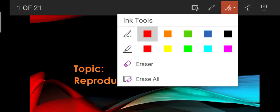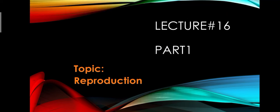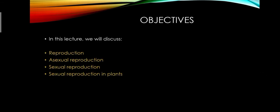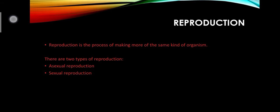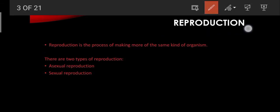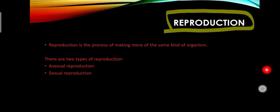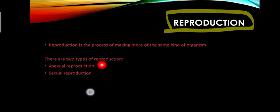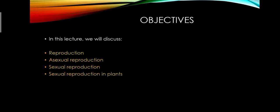Welcome to the sixteenth lecture, part one. The topic of this lecture is reproduction. We will discuss asexual reproduction, sexual reproduction, as well as sexual reproduction in plants. The further topics of the sixteenth lecture will be covered in the next lectures. Reproduction is the process of making more of the same kind of organisms. There are two types: asexual reproduction and sexual reproduction.